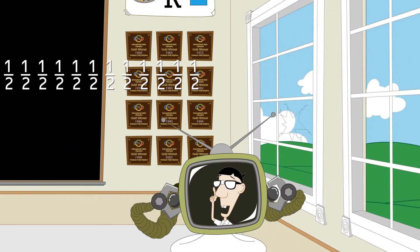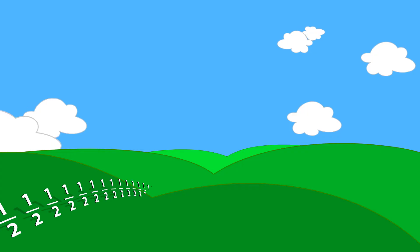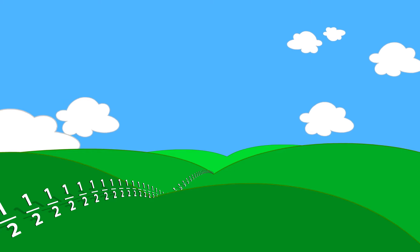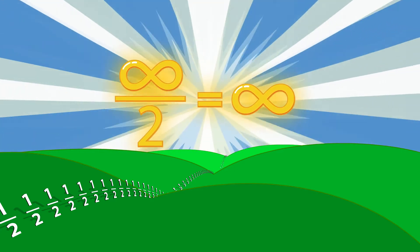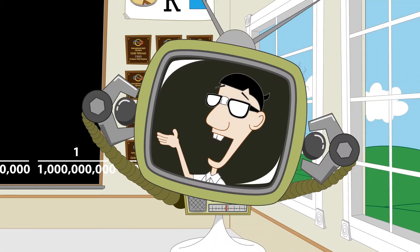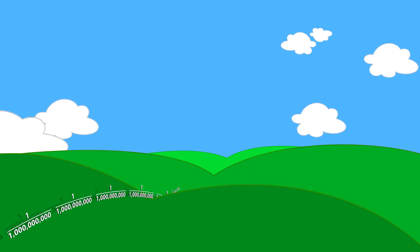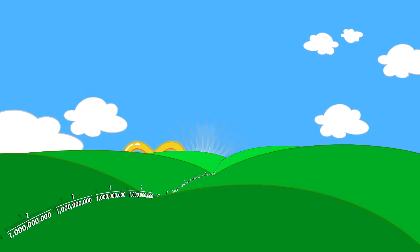An infinite number of one-halves is infinity times one-half. One-half of infinity is still infinity. Even an infinite number of one-billionth is one-billionth of infinity, which is still infinity.